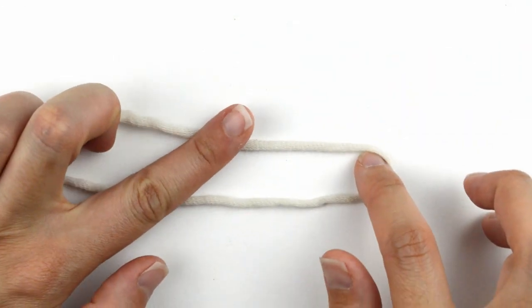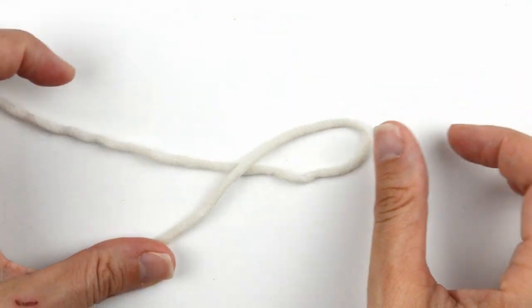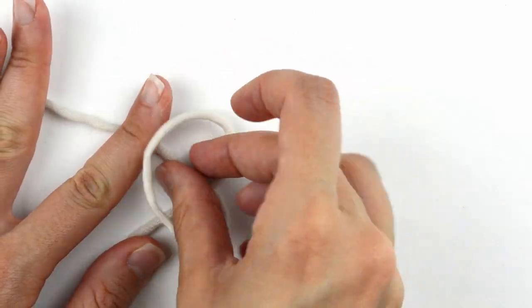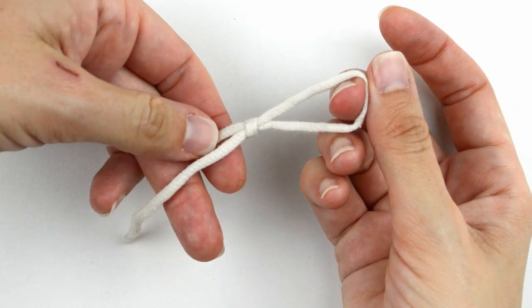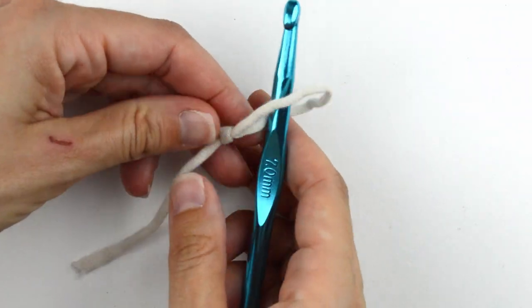You'll start by making a slip knot. The way I do it is I make a crossover and then pull the yarn through the center. Place it on your hook and give it a tug to tighten.